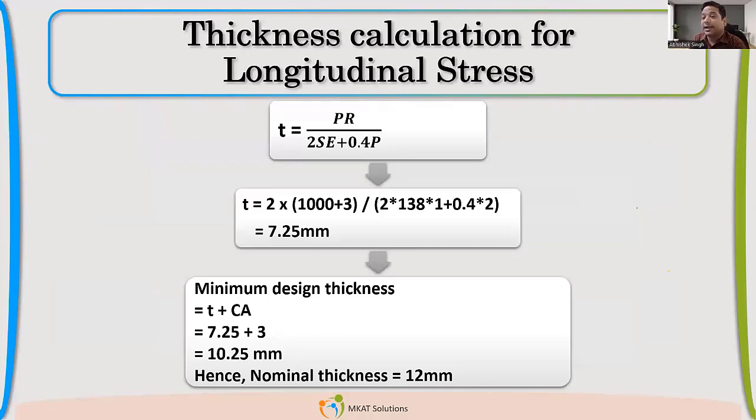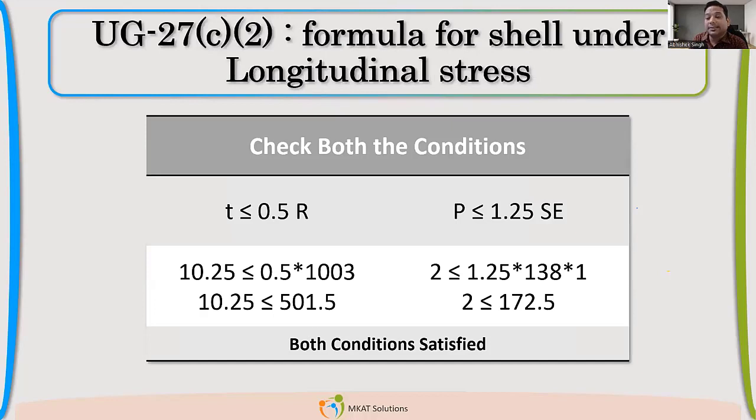Now, if you have understood that all the terms, definitely you can do the calculation for longitudinal stress also. Only the formula is little bit changed. Radius and everything will remain same. The nominal thickness, what we are getting here is 12 mm. So definitely the higher one I'll have to take. So we'll take 18 mm, which is coming because of circumferential stresses.